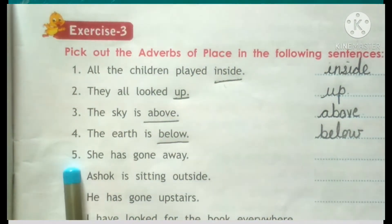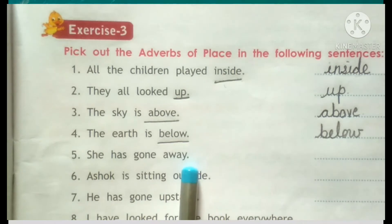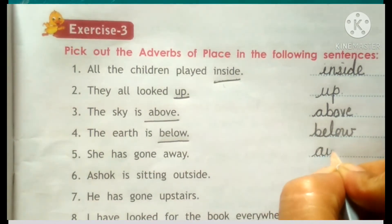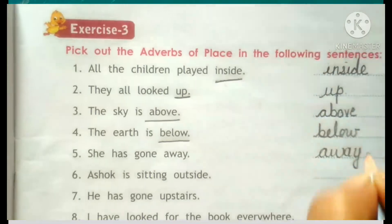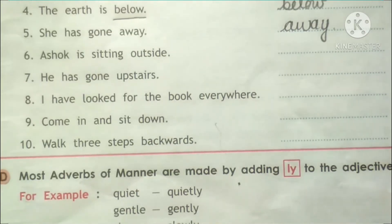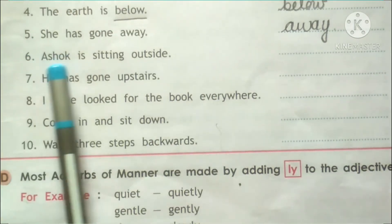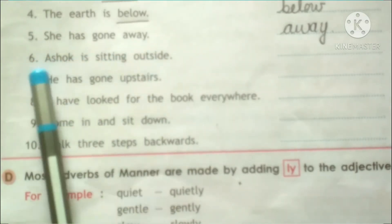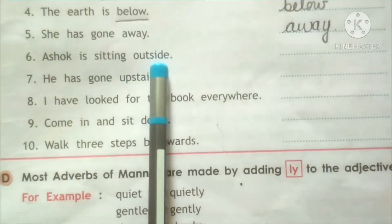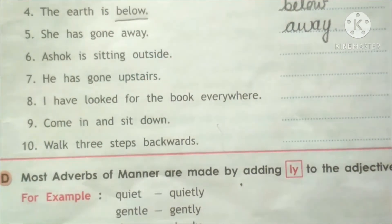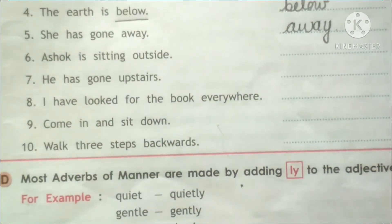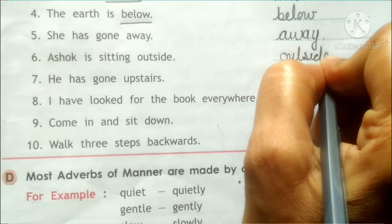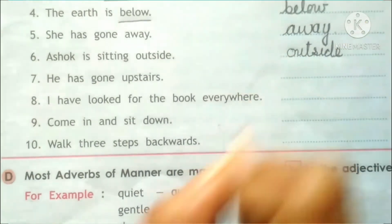Number 5: She has gone away — kahan pe gai? Away — matlab door. Number 6: Asok is sitting outside — Asok kahan pe baita hai? He is sitting outside. Outside bata raha hai adverb of place — bahar.